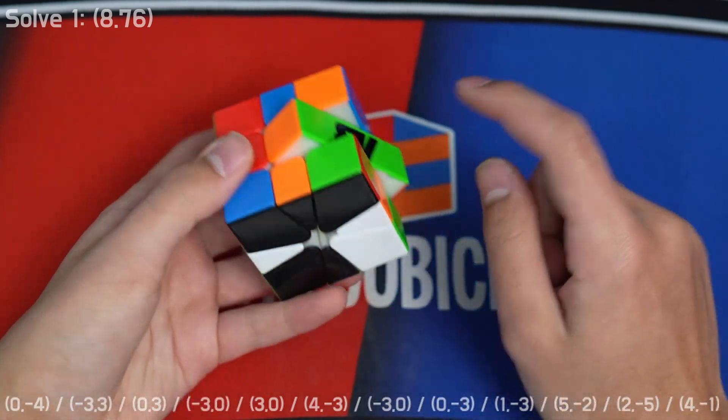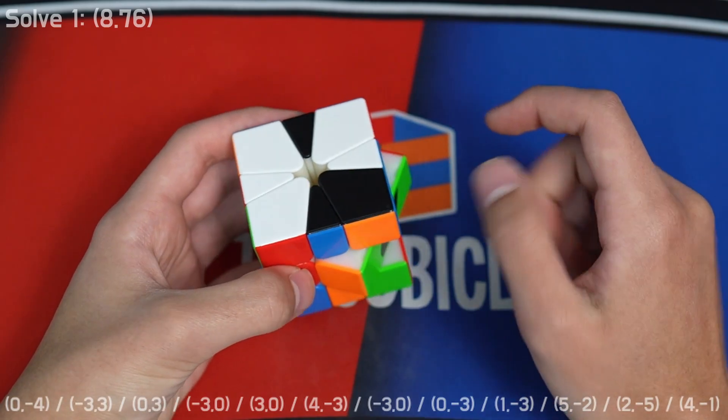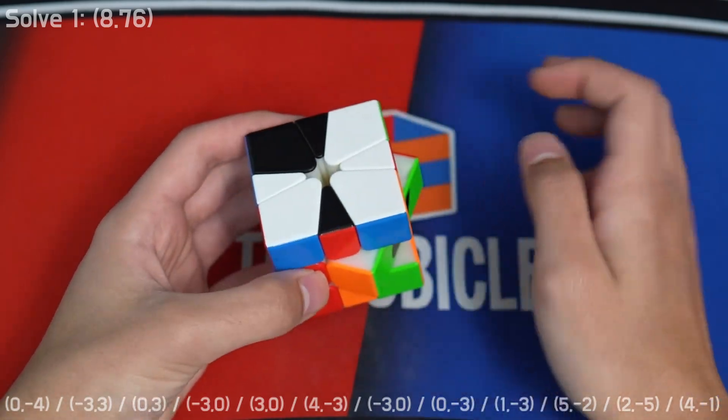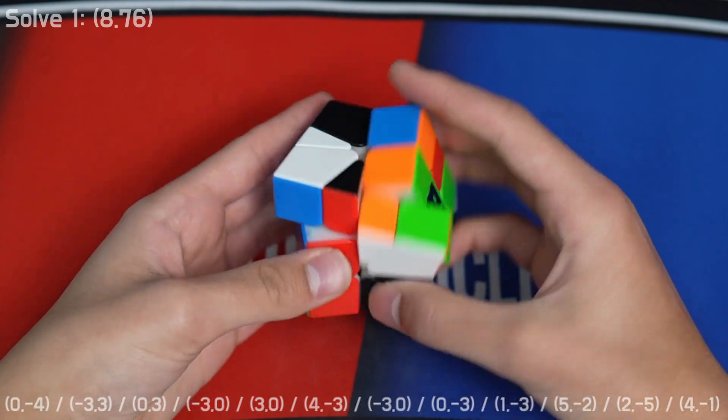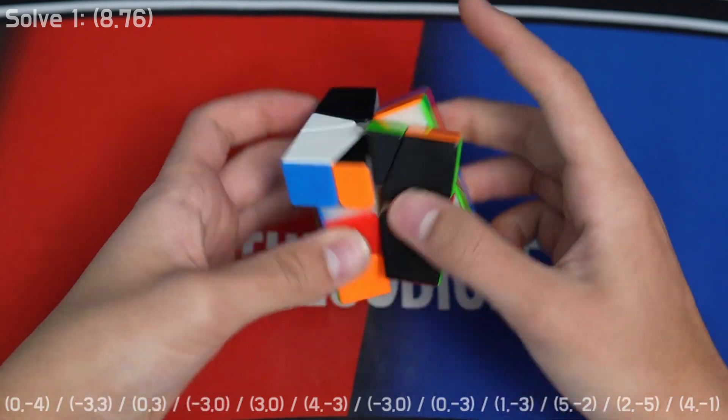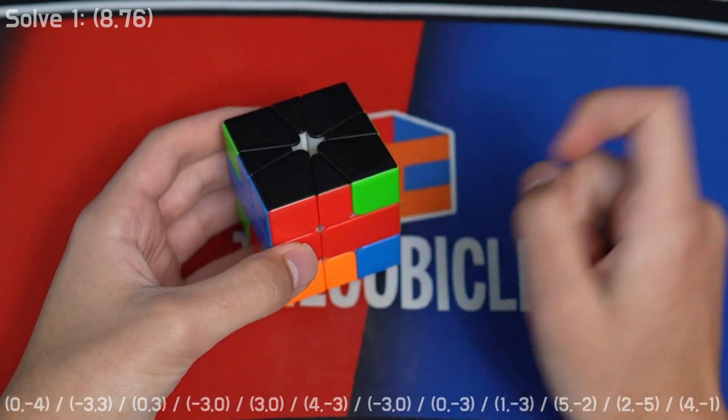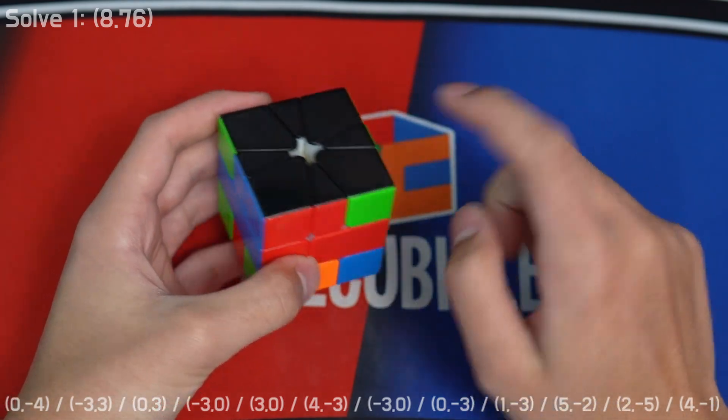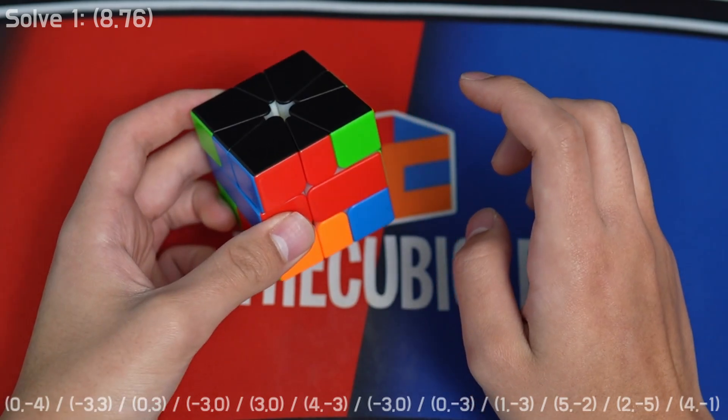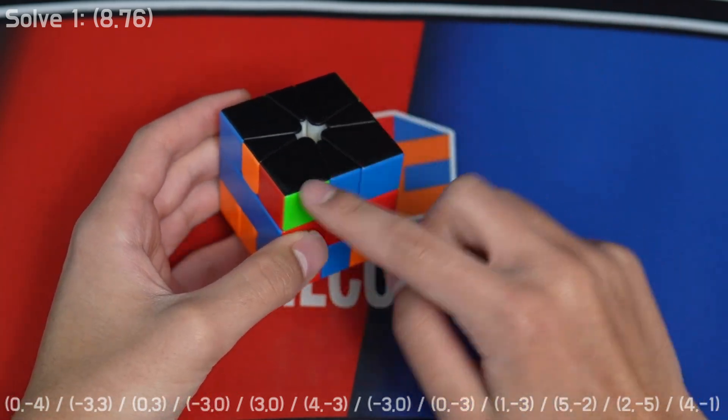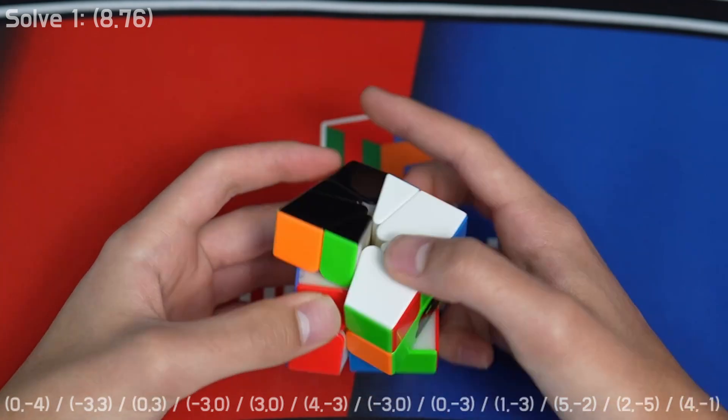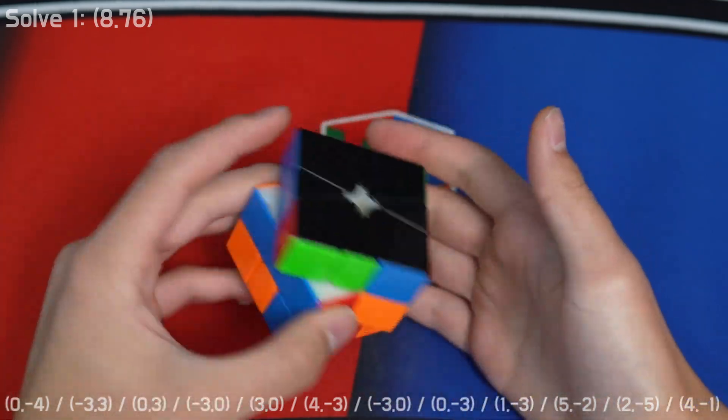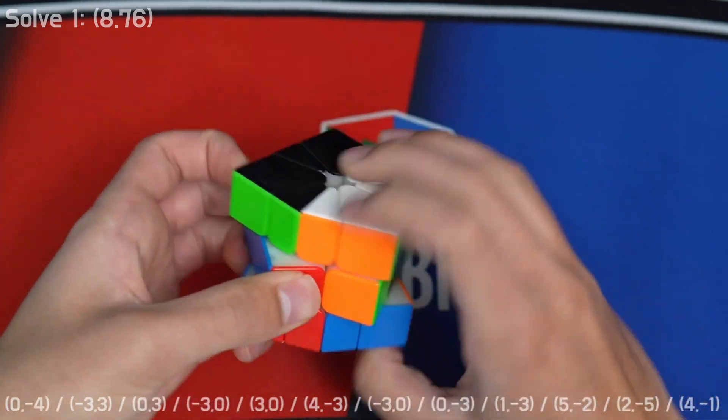Then for OBL it was also pretty unlucky. I had to do a U2 D prime into opposite axes which is like this. And then for PBL I did a bad habit which is putting the headlights in the back to recognize. So I saw I had an A perm and an R perm, headlights in the back. Then I realized it's bad. And for this one I do a U2 good U perms into JJ, but it was super lucky and bad recognition, so it was an 8.76.